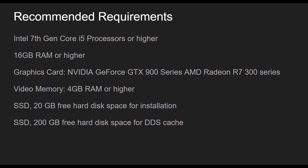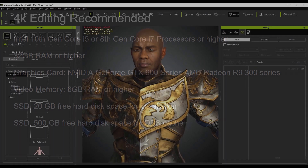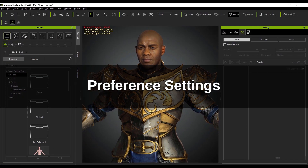If we take a look at the 4K editing recommendations, you'll see that you'll want to have at least 6GB of video memory with a graphics card newer than the NVIDIA GTX 900 series or Radeon R9 300 series.